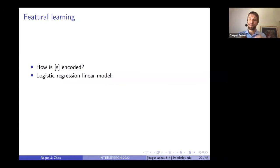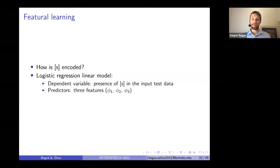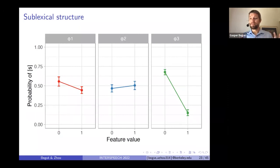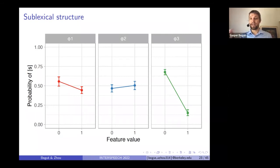Now we can test how sublexical information is encoded. We look at a very salient phoneme in the eight test words — namely S — and see how it gets encoded. We fit the data to a logistic regression model where the dependent variable is the presence of S in the input test data and the predictors are the three feature values. The first two bits appear to have little effect on the presence of S, but the third bit has a very strong effect: value zero in the third bit denotes the presence of S, showing sublexical structure.